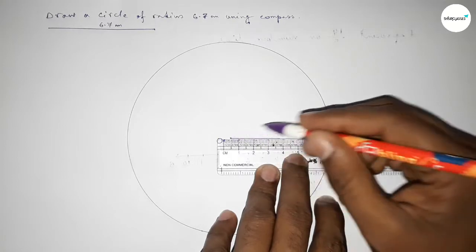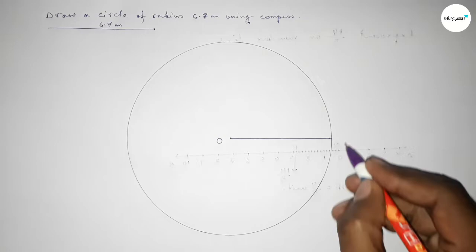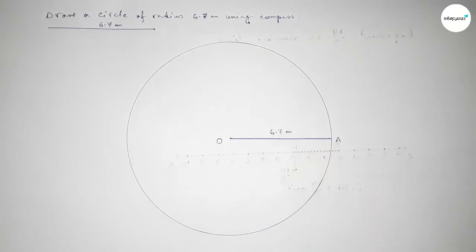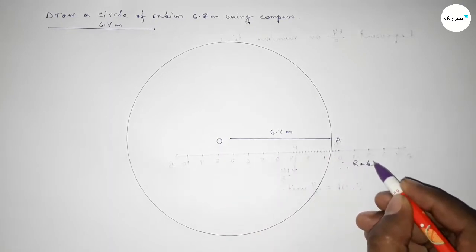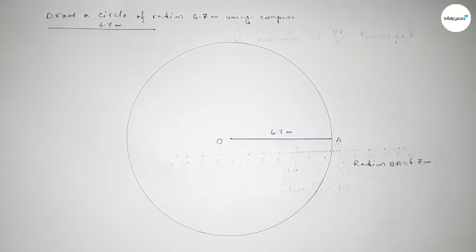Taking here point A, so OA equals 6.7 centimeters. Therefore, radius OA equals 6.7 centimeters. That's all. Thanks for watching. If this video is helpful to you, then please share it with your friends.